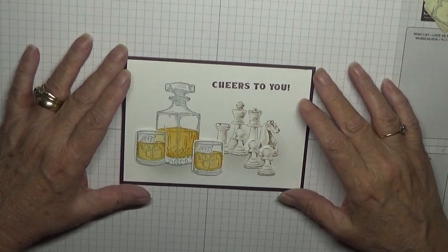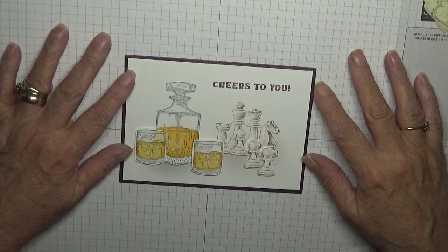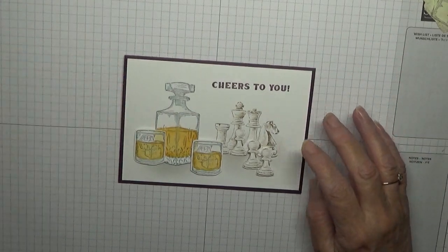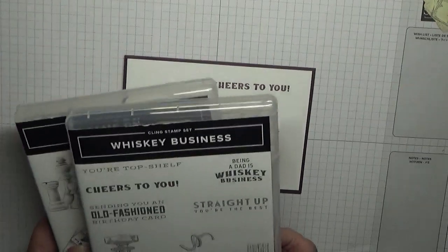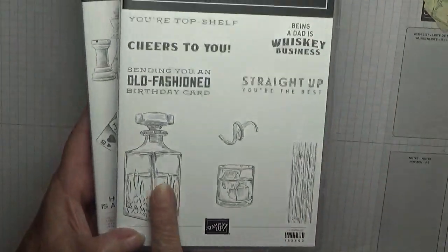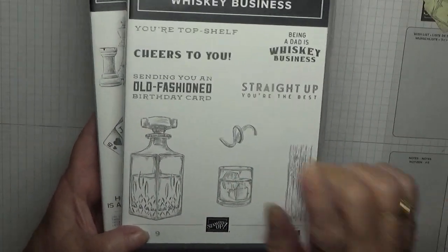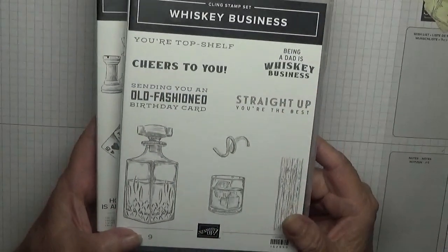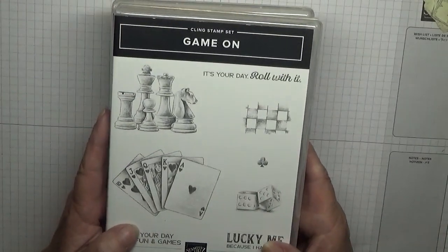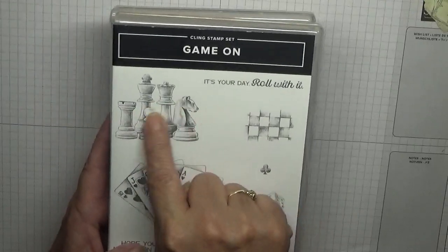Hi everybody, George Burns here. Today I'd like to show you how I made this card. I made this card using two new stamp sets: Whiskey Business and Game On. I'm going to be using the decanter, the glass, and the sentiment 'cheers to you,' and also the chess pieces.